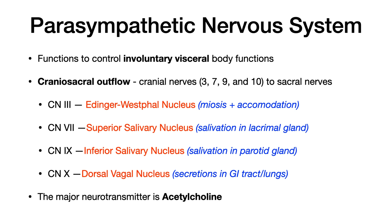The parasympathetic nervous system functions to control involuntary visceral body organs and is said to have craniosacral outflow, meaning it originates at the cranial nerves and has functioning down to the sacral nerves. This is in contrast to the sympathetic nervous system, which has thoracolumbar outflow. There are four cranial nerves that have parasympathetic activity, and within those cranial nerve tracks there are bilateral nuclei with very specific parasympathetic function — this is incredibly high yield.